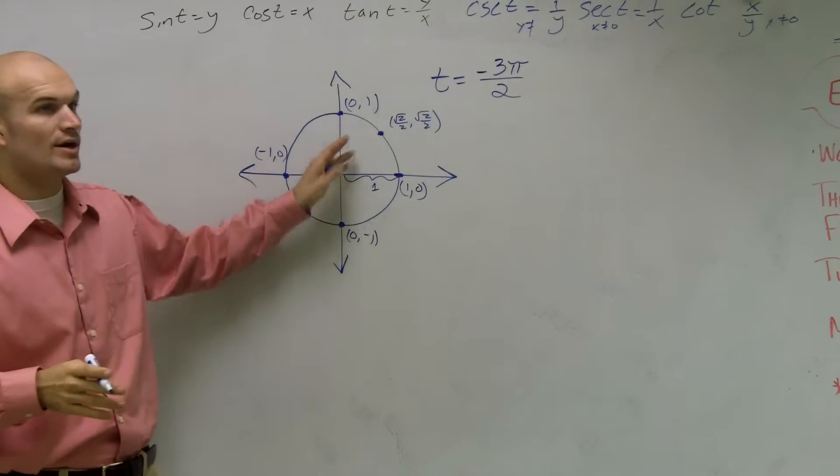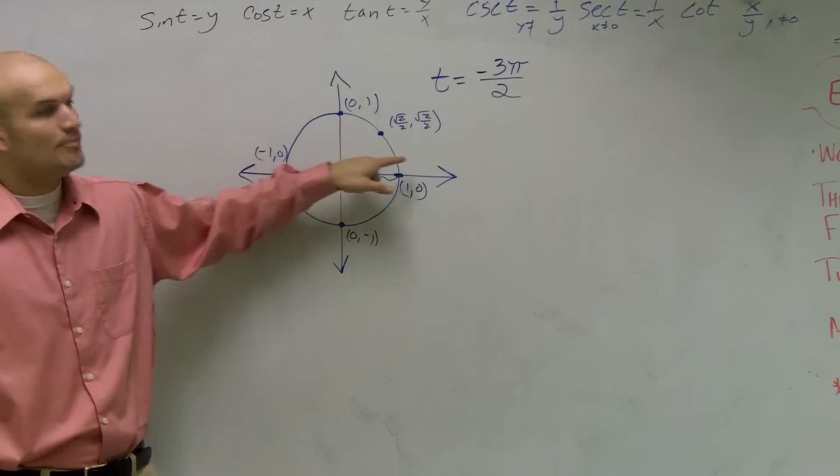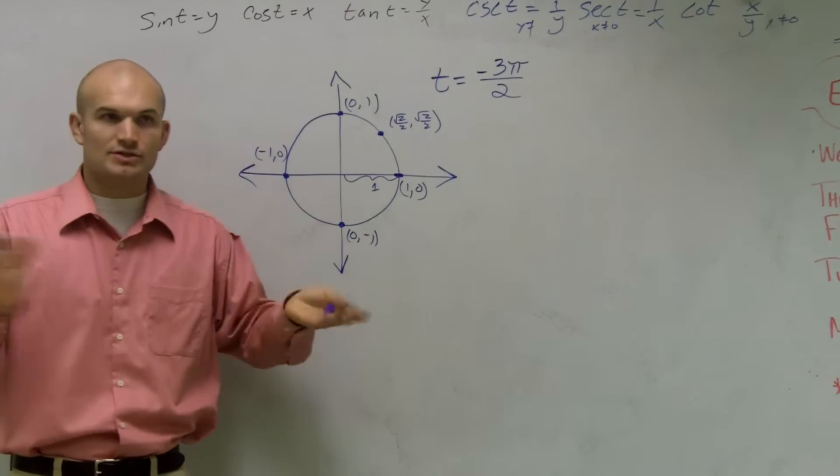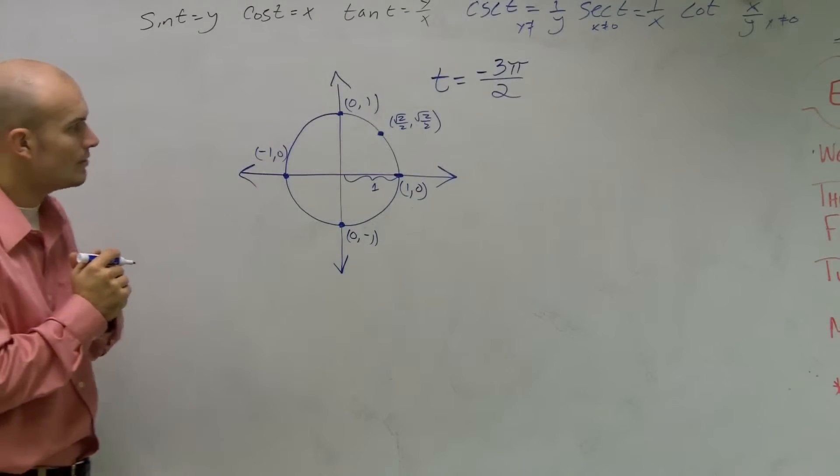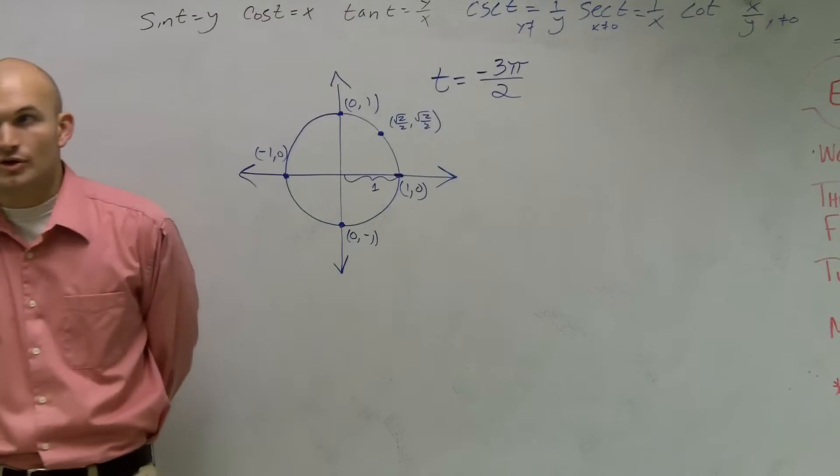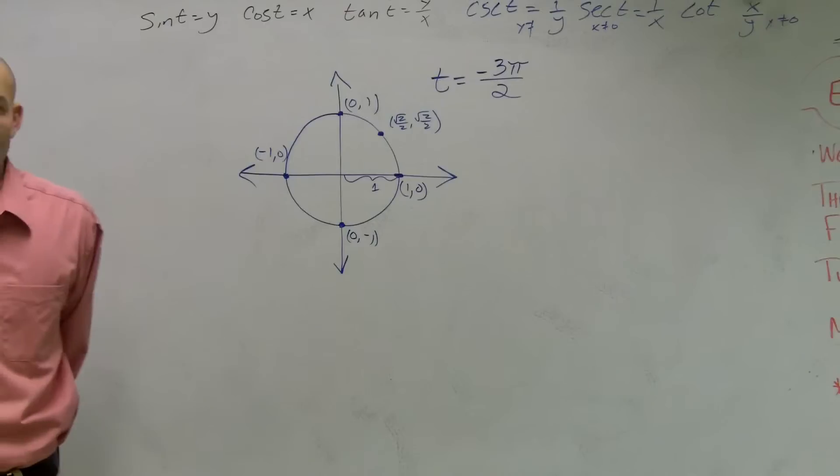And then there was two other points. We said one where it was pi over 3 and then pi over 6 had that one half and the square root of 3 over 2 as your coordinate points. Well, here I have a point T equals negative 3 pi over 2. And what I need to do is I need to determine where is this point.